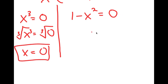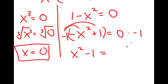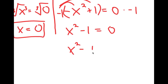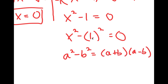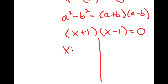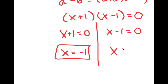For 1 minus x squared equals 0, I'm going to rewrite this as negative x squared plus 1 equals 0, then multiply both sides by negative 1 to get x squared minus 1 equals 0. Now, 1 is the same thing as 1 squared, so I have x squared minus 1 squared equals 0. Using the difference of squares — a squared minus b squared equals a plus b times a minus b — this becomes x plus 1 times x minus 1 equals 0. So, x plus 1 equals 0 gives x equals negative 1, and x minus 1 equals 0 gives x equals 1.